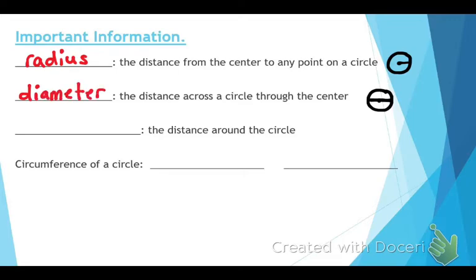The next one asks for the distance around the outside of a circle. What is that distance? What did you guys call it? The circumference is correct.